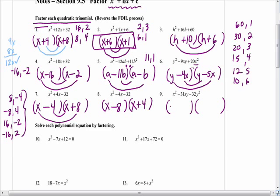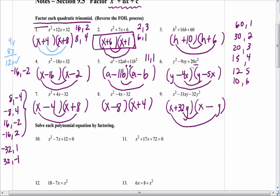Here we need to do two things: take my x and my x, and we're going to have a y and a y. Ingrid, which factors of 32 are going to add to negative 31? It's either negative 32 and positive 1 or positive 32 and negative 1. 32 and negative 1. So make this one positive 32 and this one negative y. To check your smiles: that's 32xy minus 1xy — wait, that's not right. It should be negative 32 and plus 1. Good thing I checked my smiles.